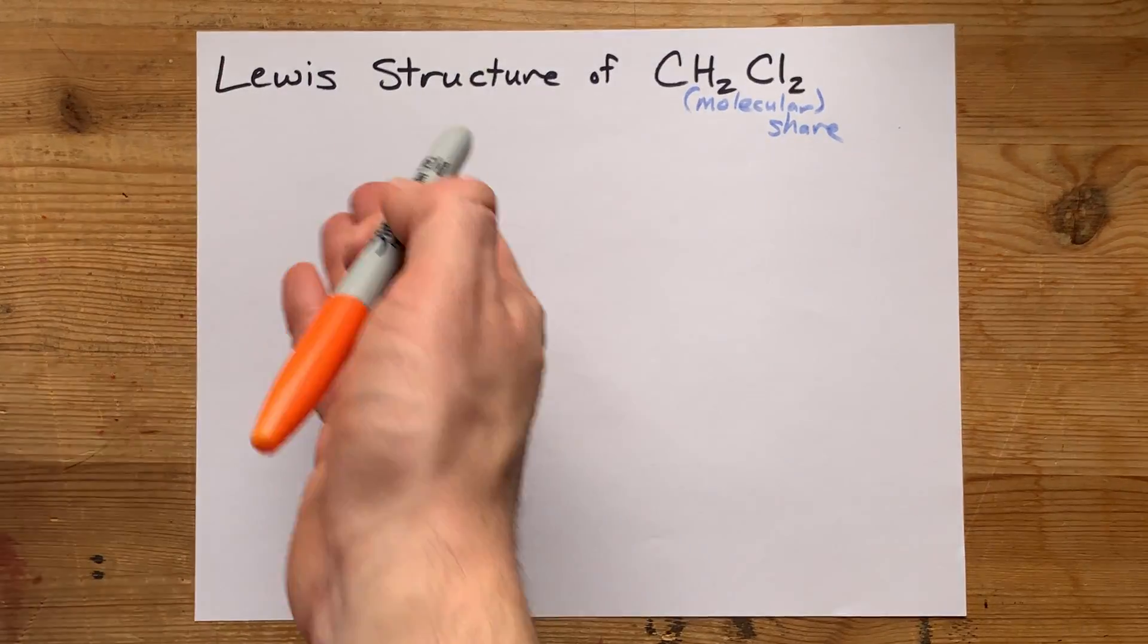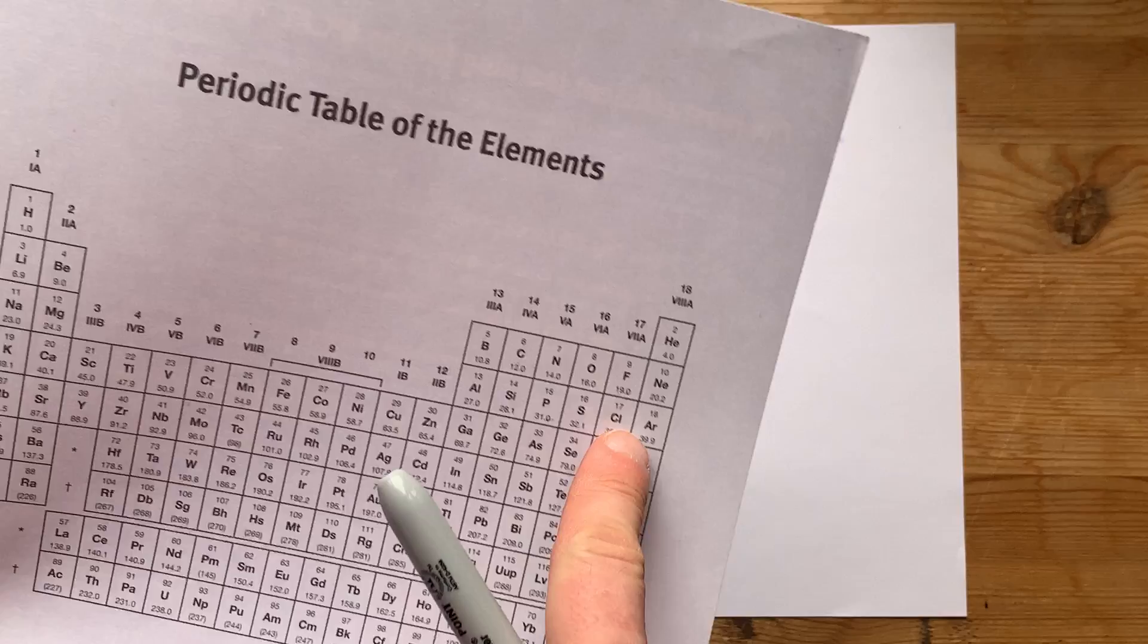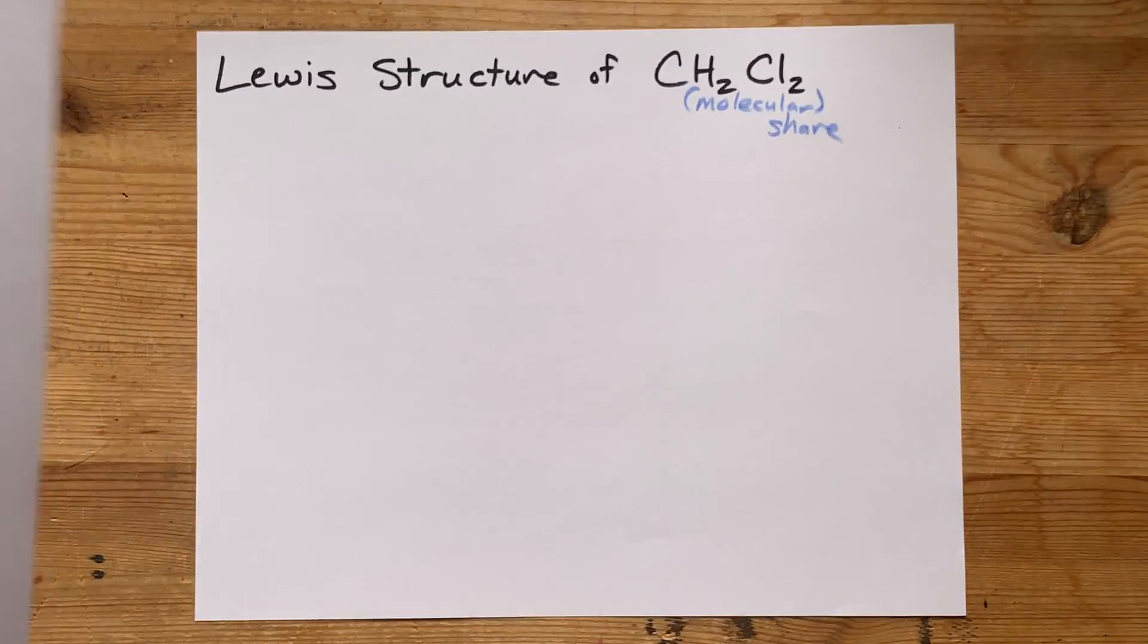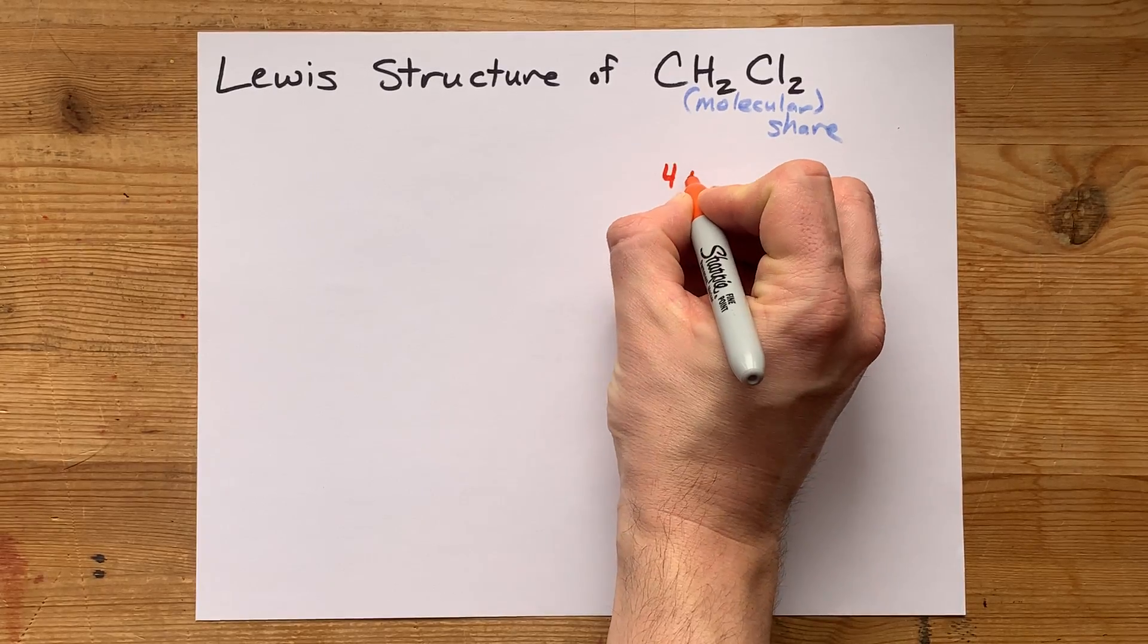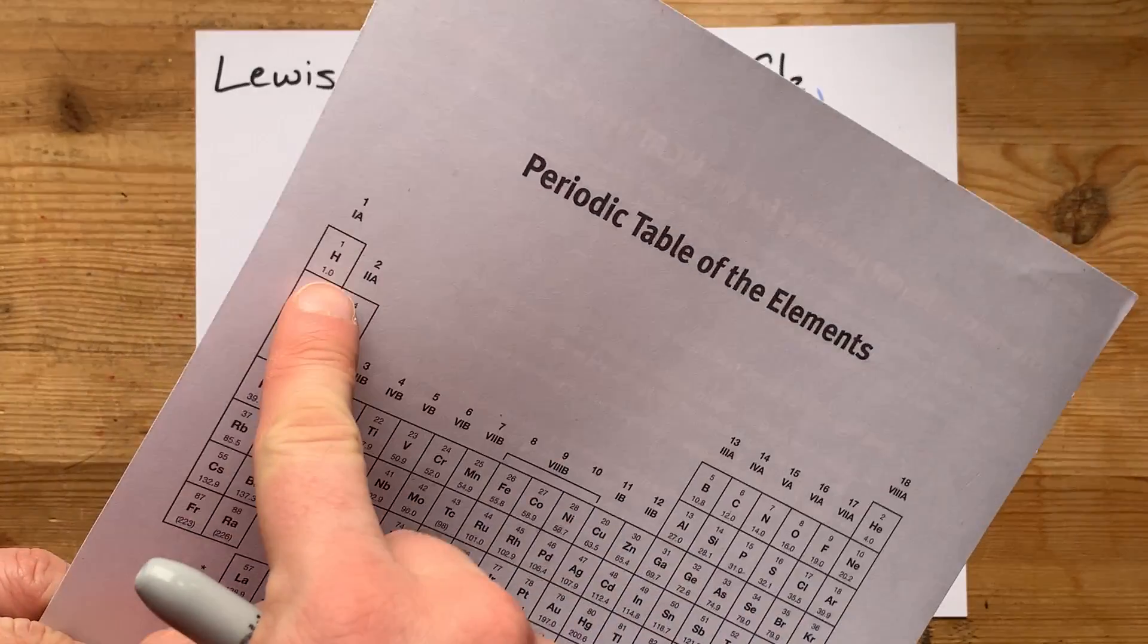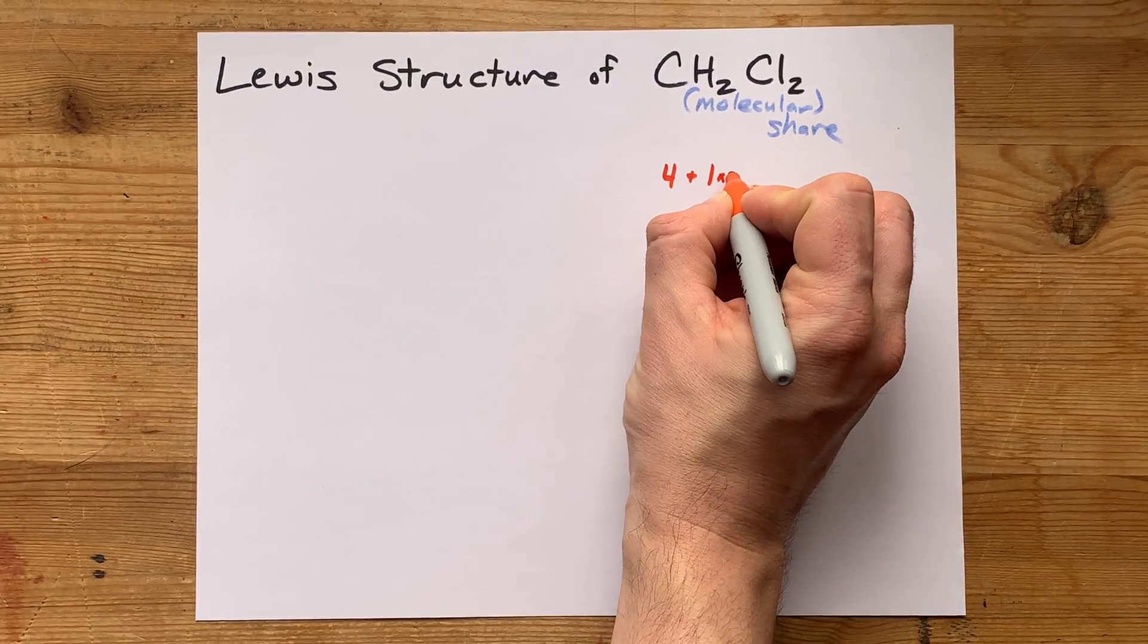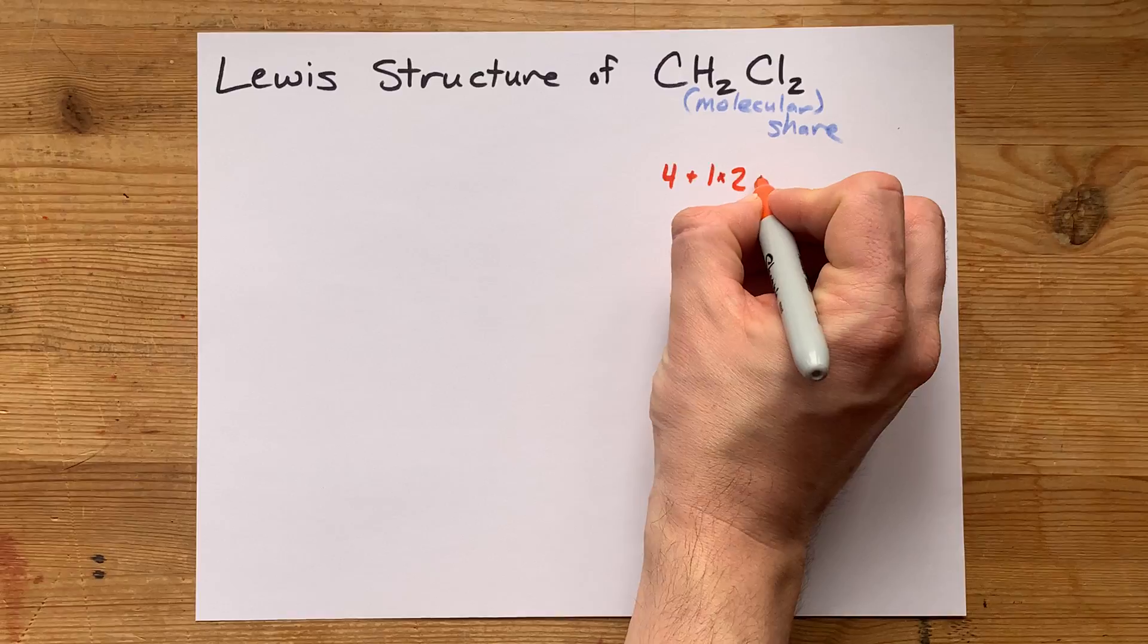Now let's figure out how many electrons we're actually sharing here. Carbon is in group 14, so it brings four valence electrons with it. Hydrogen is in group 1, so it brings one electron. But there are two hydrogens, so it's 1 times 2.